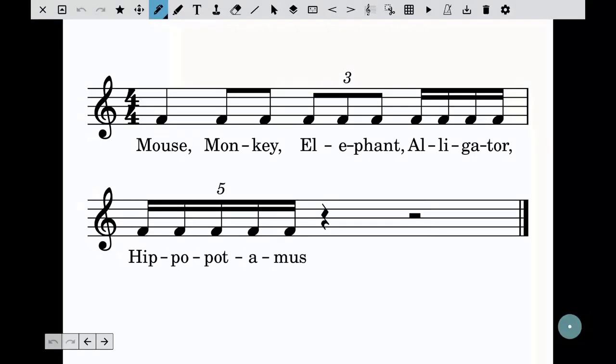Beat two, two-syllable word, monkey. For beat three, three-syllable word, elephant. For beat four, these are my semiquavers. This is my alligator. And for the next bar, I've got a quintuplet. And this is a hippopotamus. So a five-syllable word.